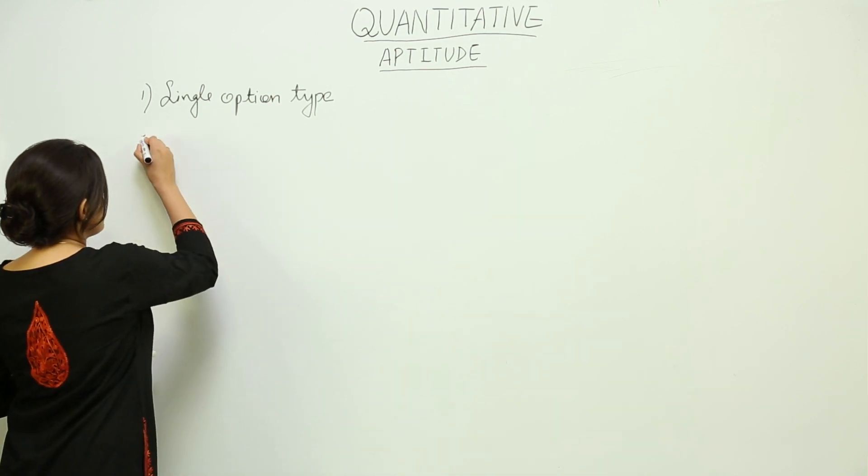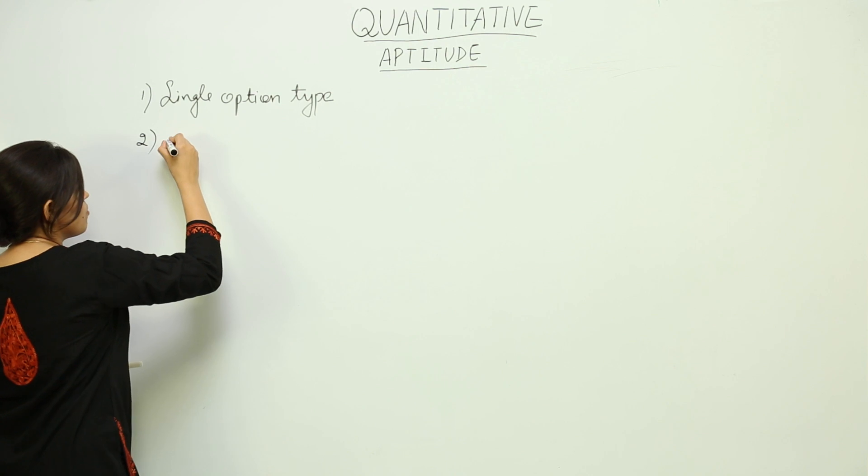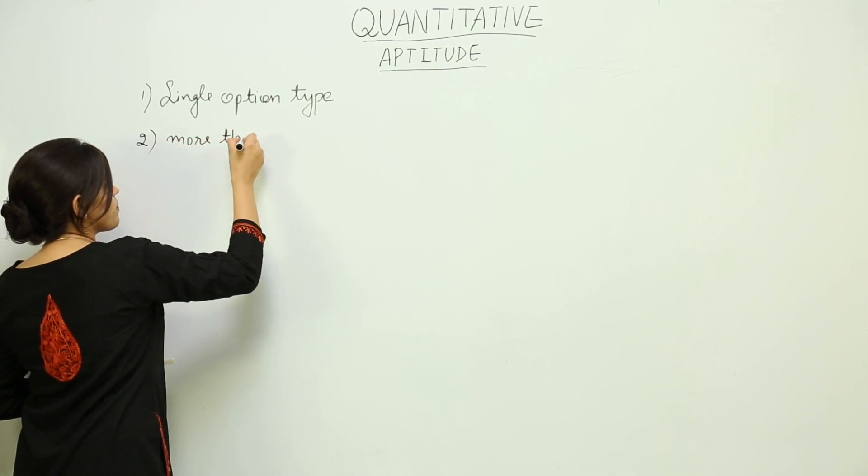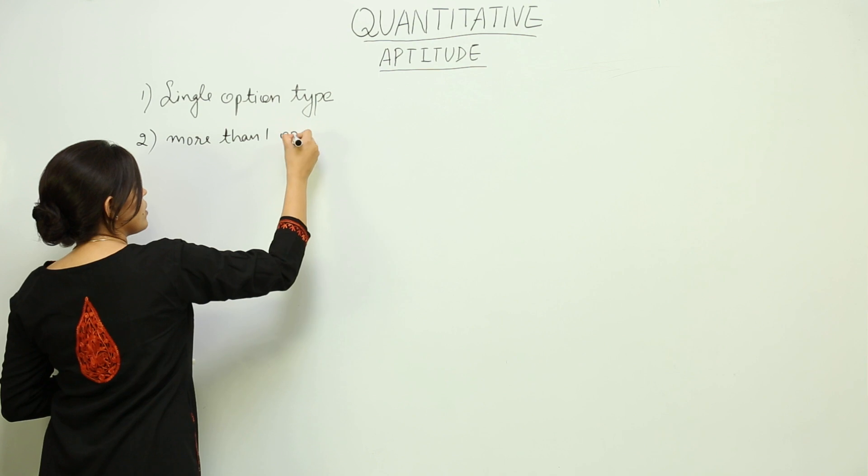The second type of question you will see is known as more than one option correct.